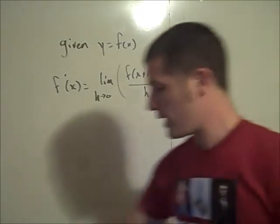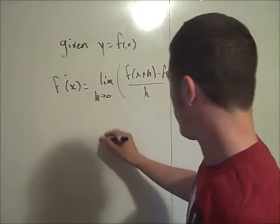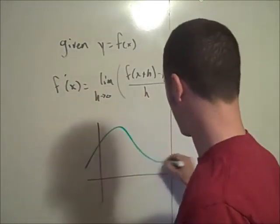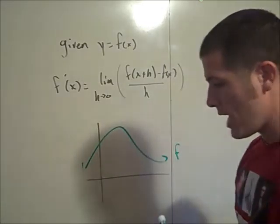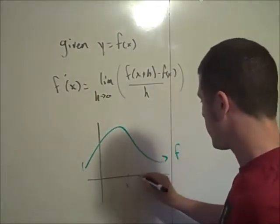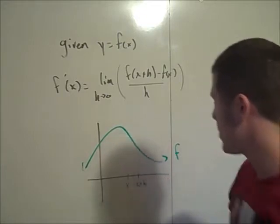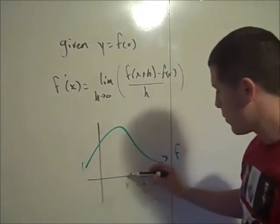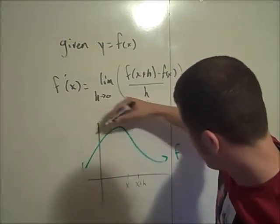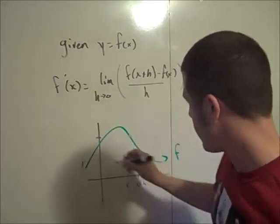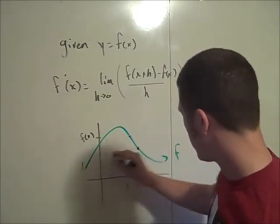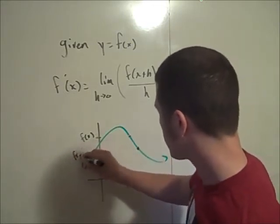We can think about this idea graphically. If you have some function f, and we consider two x values — this x value, and then x plus h — we have two corresponding y values. When we have x, we have a point with y value f of x, and at x plus h, we have a point with y value f of x plus h.